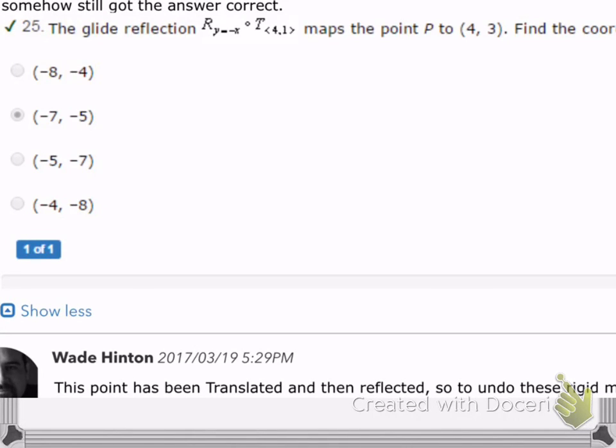Hello NSA student, this is Mr. Hinton with the math department dealing with a frequently asked question from week 26. This question says the glide reflection across the line y equals x composed with a translation that is right four and up one maps the point P to (4, 3).